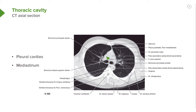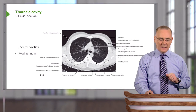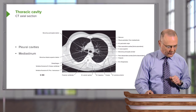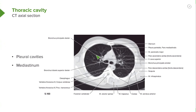We also have in this area a bright spot, again representing blood flow. This is blood flowing through the superior vena cava, and it's going to empty into the right atrium. If we look within the substance of the lung, we can see bright areas that have a branching pattern.